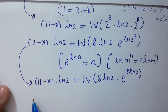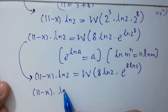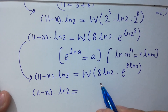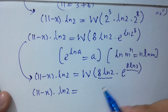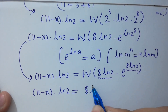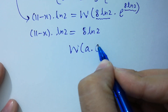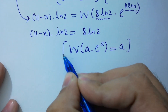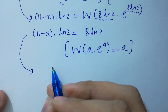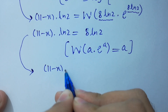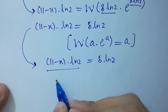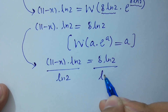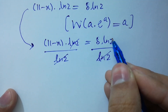So we have (11 minus x)·ln 2 equal to 8·ln 2. Dividing both sides by ln 2, ln 2 cancels, giving us 11 minus x equal to 8.